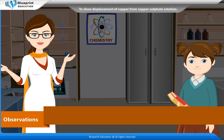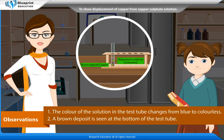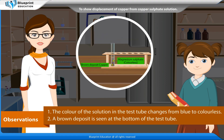Observations: The colour of the solution in the test tube changes from blue to colourless. A brown deposit is seen at the bottom of the test tube.